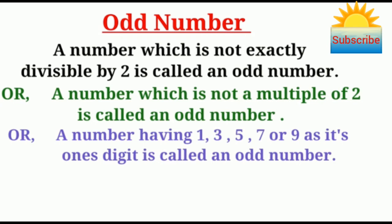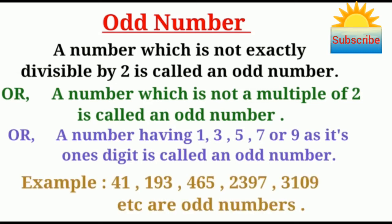For example, 41, 93, 465, 2397, 3109, etc. are odd numbers.